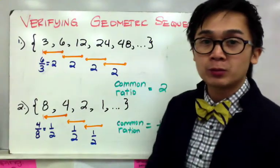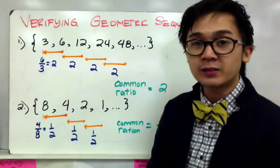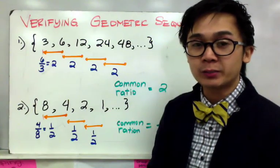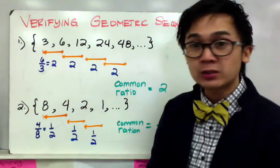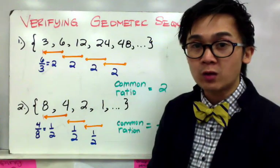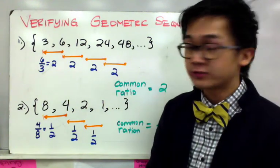Now for our first example we're going to verify if the series of numbers that we have is considered to be a geometric sequence. And to do that all we have to do is to find the common ratio for each of the pair of terms.